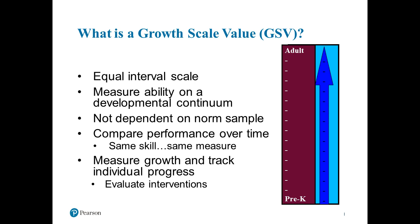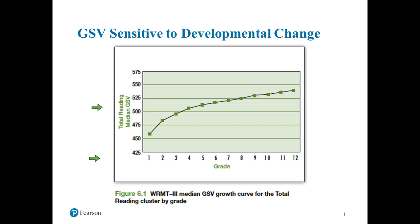We can look at individual progress to evaluate interventions over time. Here's an example: looking at the total reading score median GSV on the Woodcock Reading Mastery Test, from first grade through 12th grade we see a steady progression of skill development. We see a much deeper learning curve between grades one and four — which makes sense, because that's when children are learning to read. So this is what GSV does: it shows us how much a child increases from time one to time two.